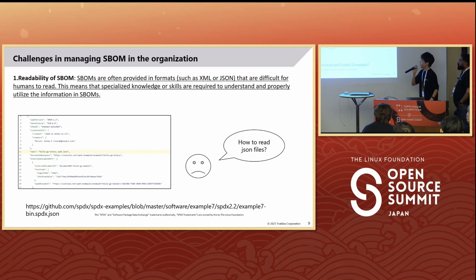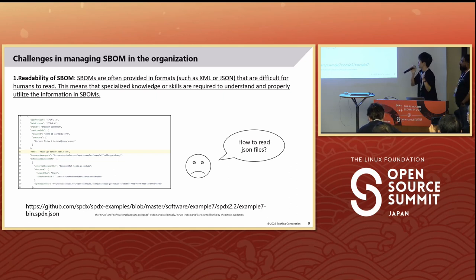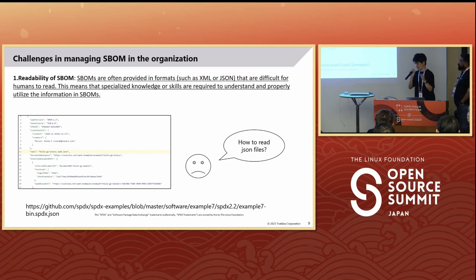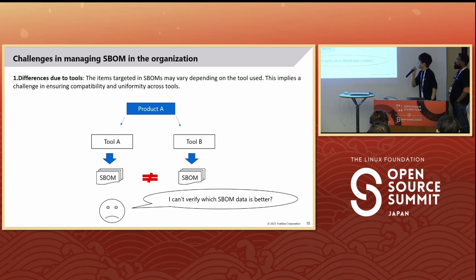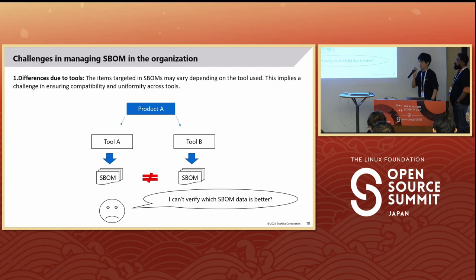A second difficulty: many people need to use SBOMs, like legal department people. In this case, if you use SBOMs for managing your software product, you need to check the JSON itself — is that really good for everyone? And another problem is that many SBOM tools exist, but they return different results. So you need to consider which result is better for you. This is a very difficult point in managing SBOMs in your organization.